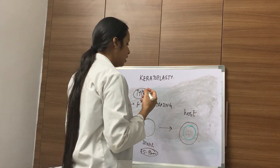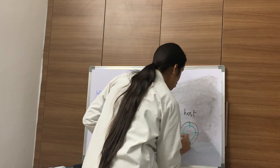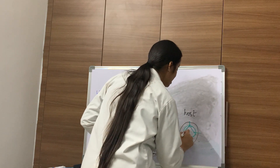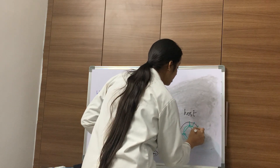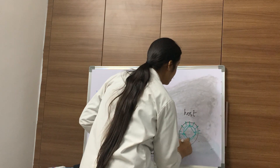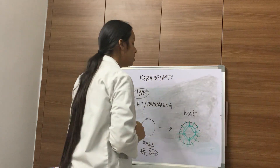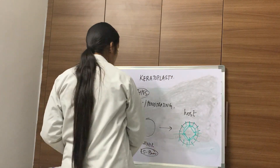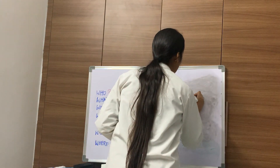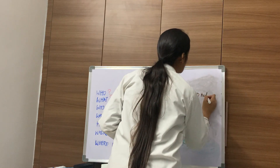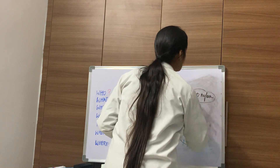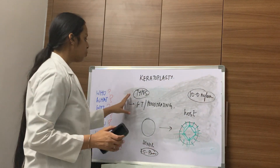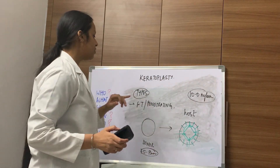If interrupted sutures are used, 16 sutures are typically placed. Four sutures are called cardinal sutures, arranged in a trapezoid pattern, and 16 sutures are placed between them. The suture used is a 10-0 nylon suture. This is how a full-thickness or penetrating keratoplasty is performed.